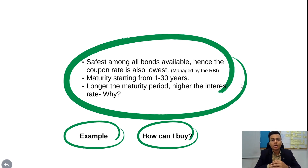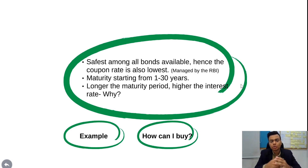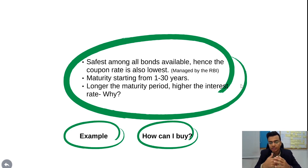When the maturity period is less than one year, we call it a T-bill — a treasury bill. If the maturity period is more than one year, we call it a government bond. Maturity in the case of government bonds can be anywhere from 1 to 30 years. And one important fact: when the maturity period is longer, the interest rate is also higher.